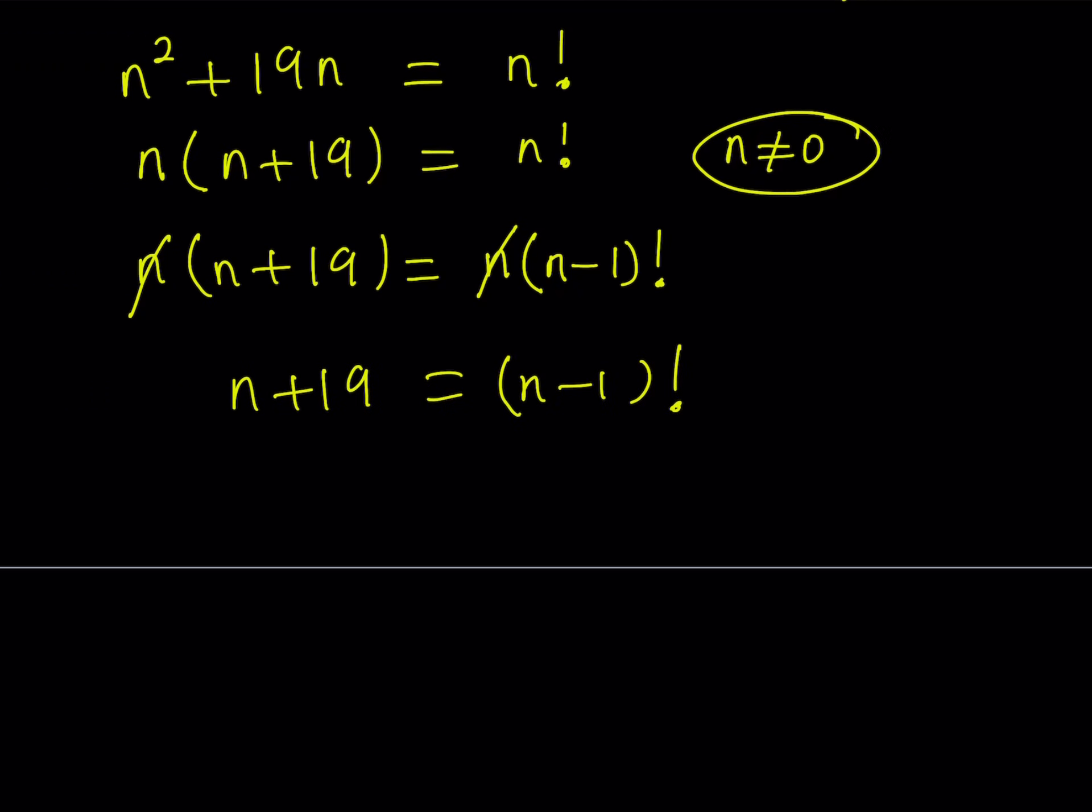I don't like the fact that our factorial contains n minus 1. I want to make it like n or k. So let's make this quick substitution. Let's replace n minus 1 with k, which means n equals k plus 1.